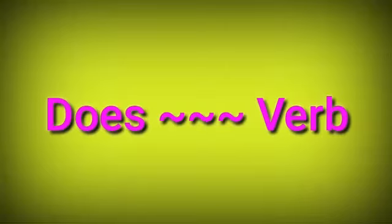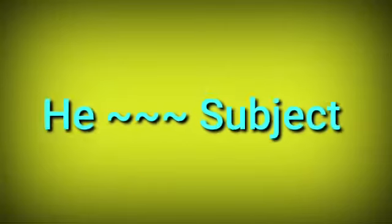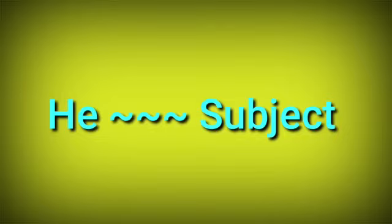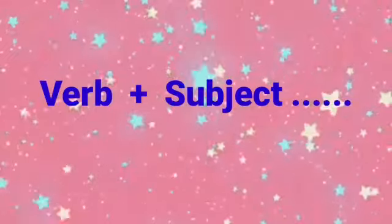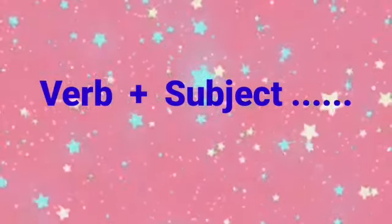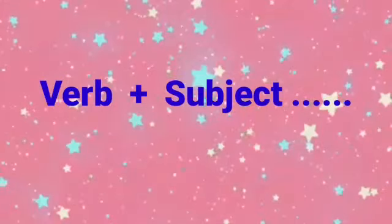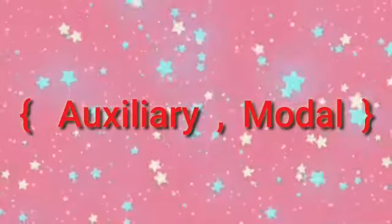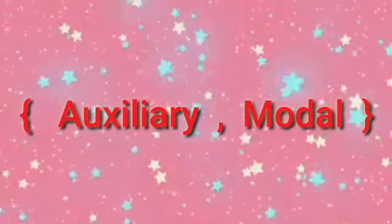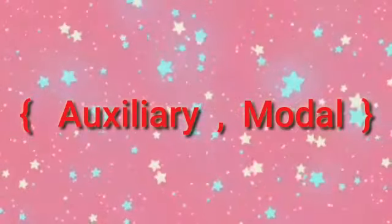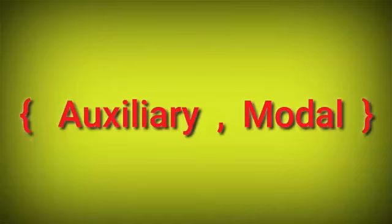In the sentence 'Does he work here?', 'does' is a verb and 'he' is a subject. Inversion means putting the verb before the subject. So in that sentence, the verb 'does' comes before the subject 'he' — that is called inversion. The verb added before the subject may be an auxiliary verb or modal verb.